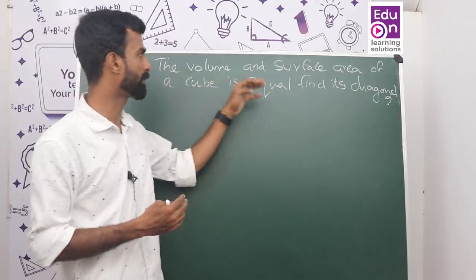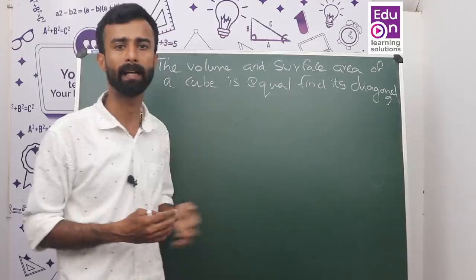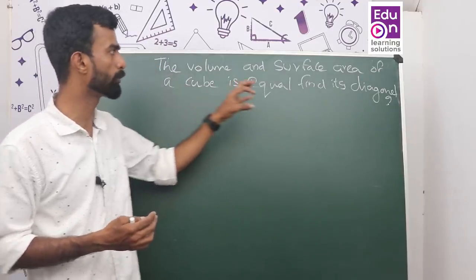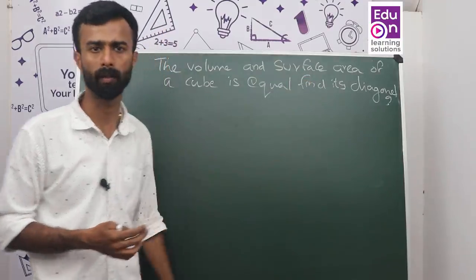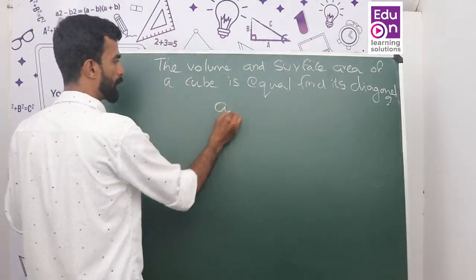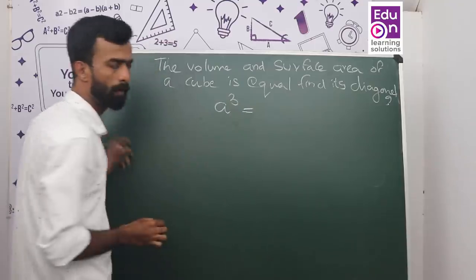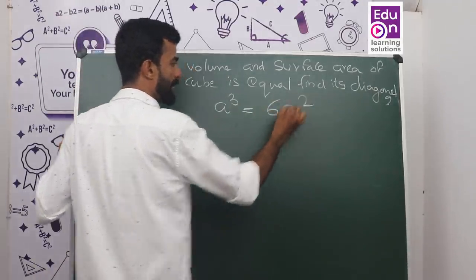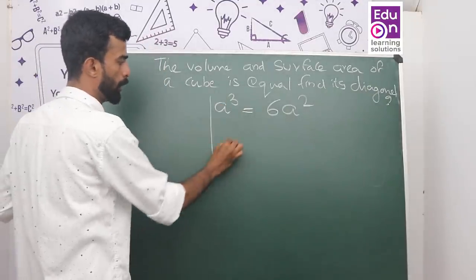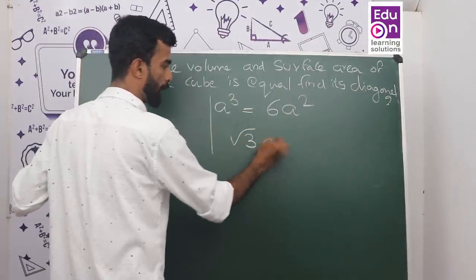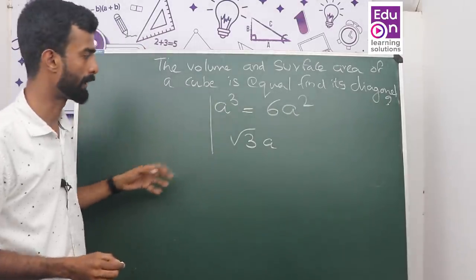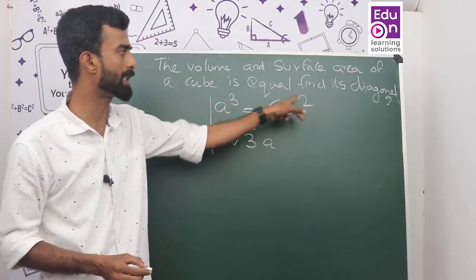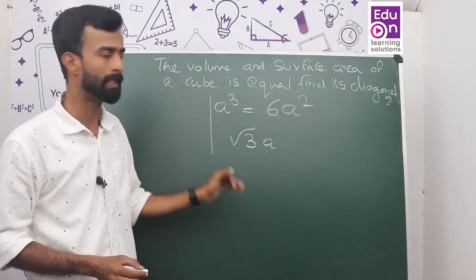The volume and surface area of a cube are equal — find its diagonal. The surface area = 6a² and volume = a³.